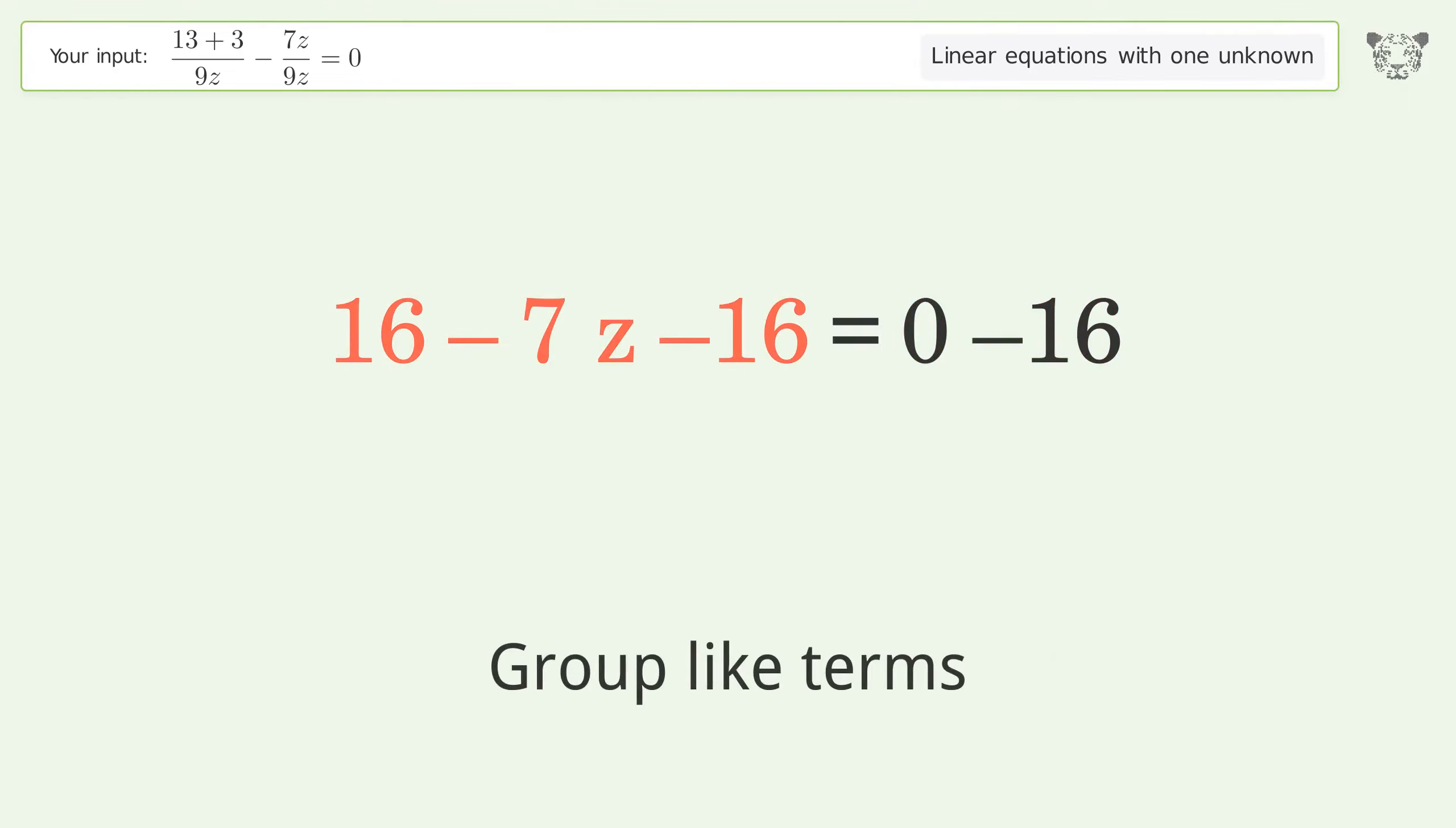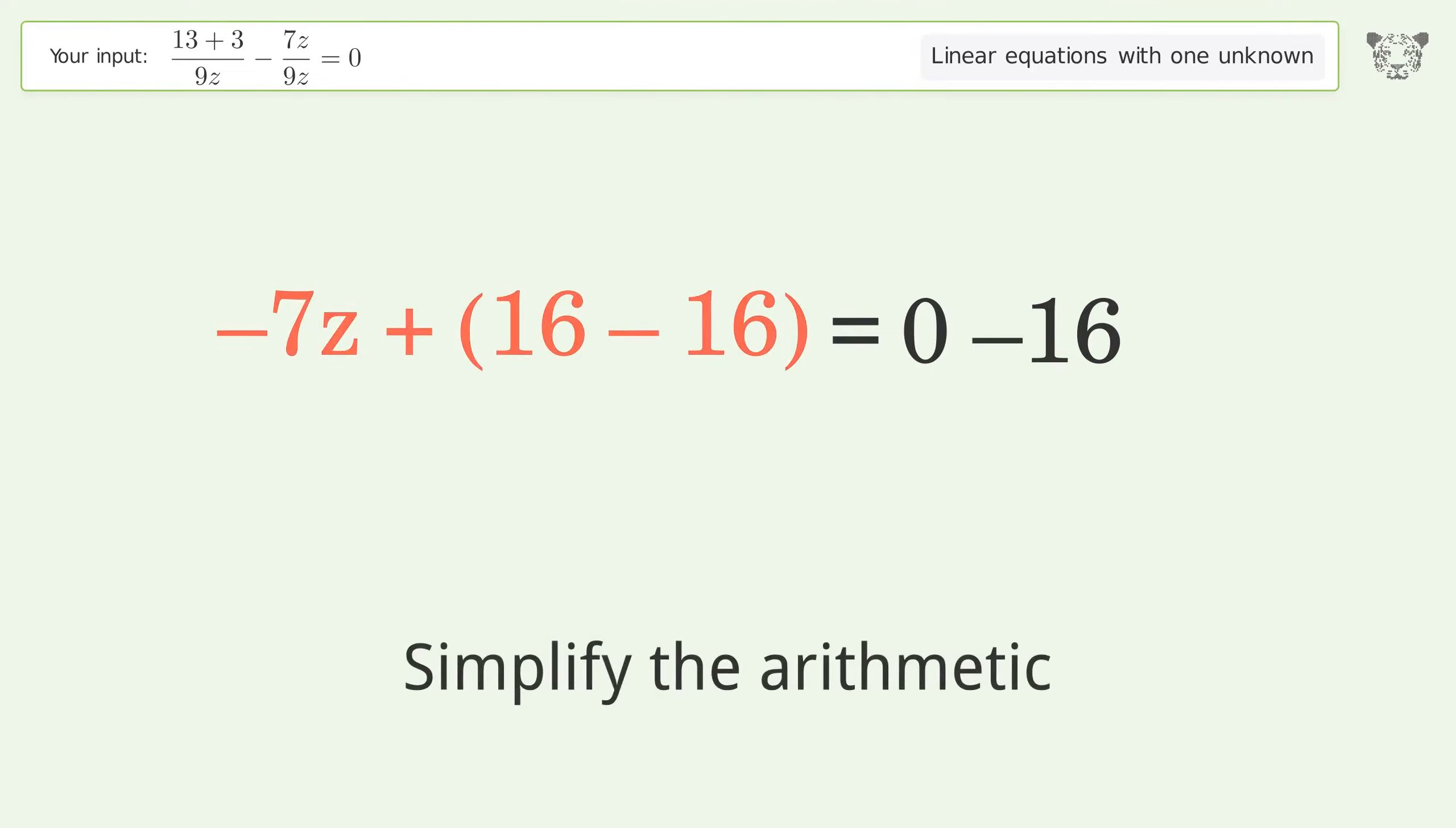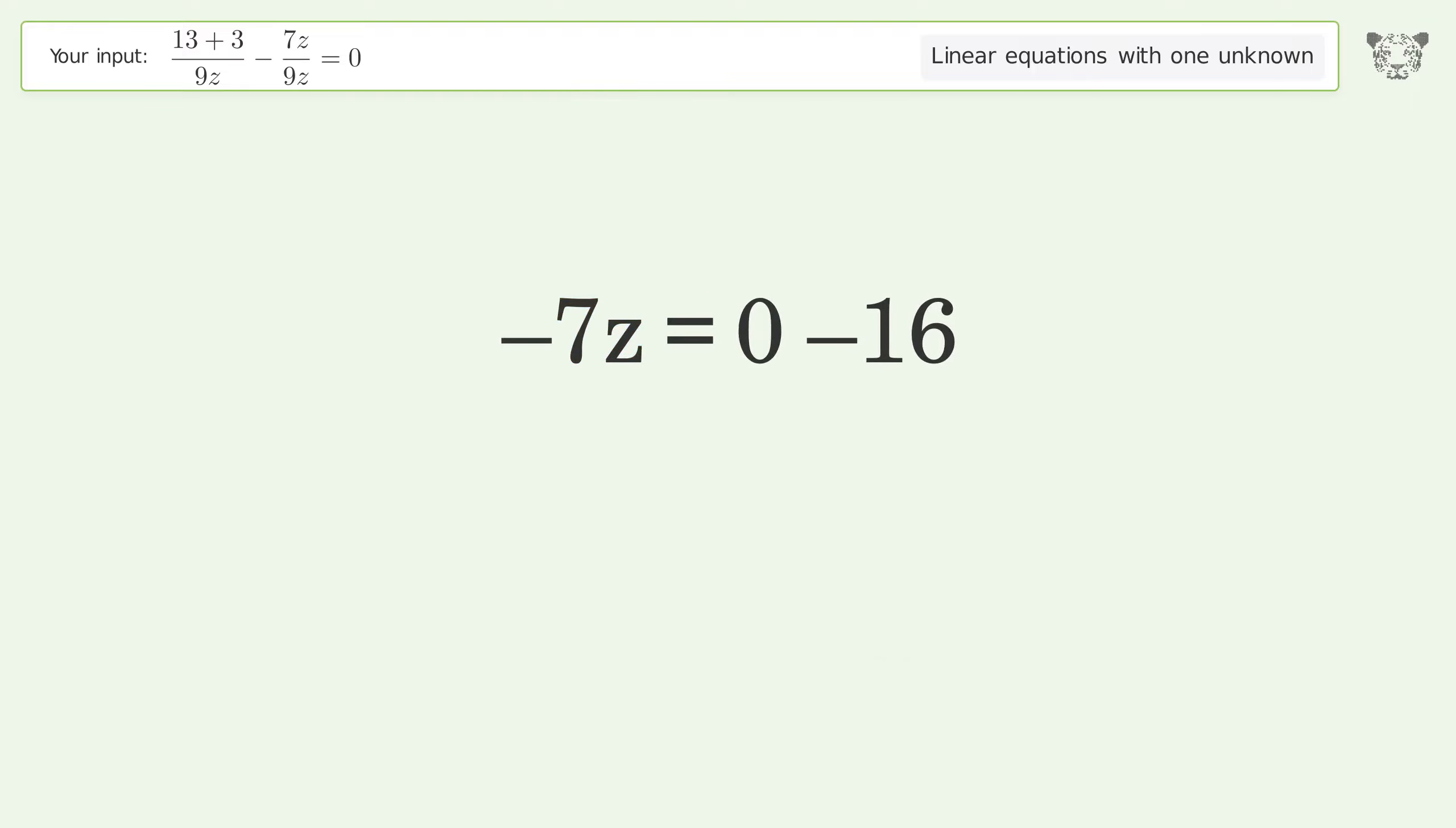Group like terms. Simplify the arithmetic. Isolate the z. Divide both sides by negative 7.